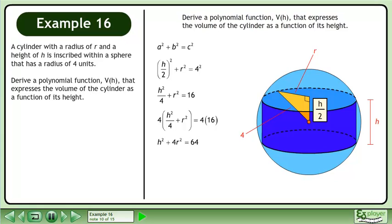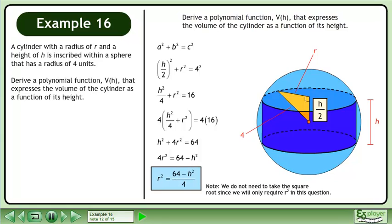This gives us h squared plus 4r squared equals 64. Subtract h squared from both sides of the equation. Divide both sides by 4 to isolate r squared. Note that we do not need to take the square root, since we will only require r squared in this question.